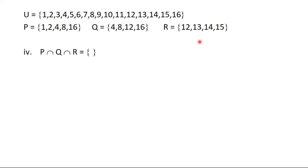Part iv says we should find P intersection Q intersection R. We want a member that is in P, Q and R simultaneously. There is no such member — for example 4 and 8 are in P and Q but not in R. So P intersection Q intersection R is also a null set.